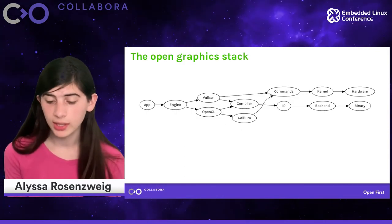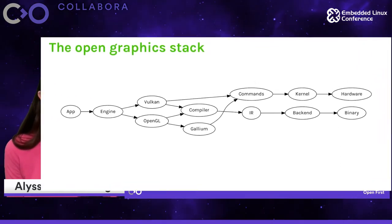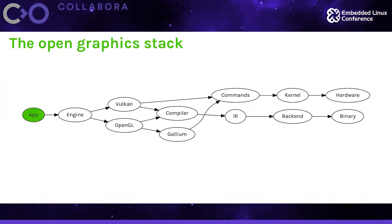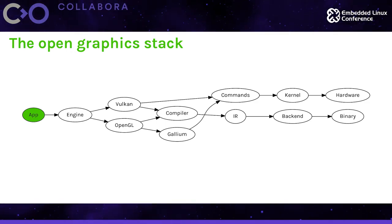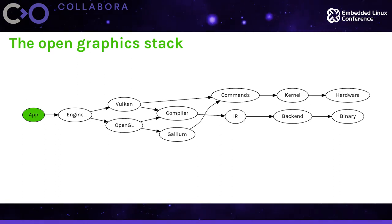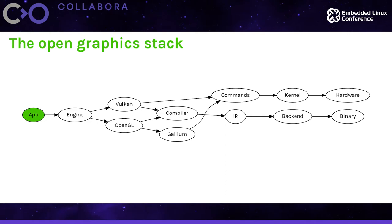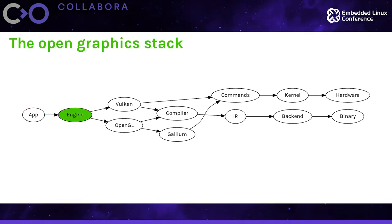So what does this open graphics stack look like? It's rather complicated, but let's break it down. At the very top of the stack, you have the application trying to do some high-level rendering. This might be a game, a desktop, or a web browser. In the embedded space, this might be a user interface — perhaps an instance of Weston running as your Wayland compositor on a contained system. At any rate, it's going to talk to a graphics engine, which mediates to the high-level APIs.